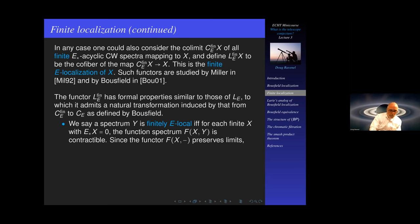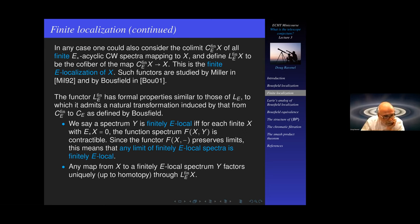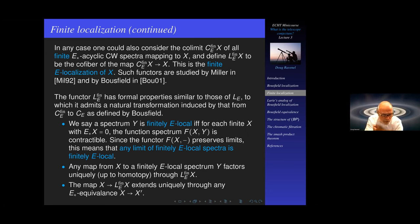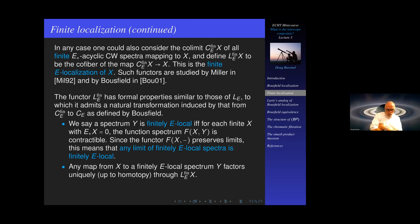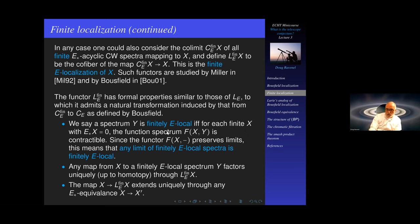A spectrum Y is finitely E-local if, for each finite X with trivial E-homology, the function spectrum from X to Y is contractible. This is a weaker condition than E-locality — before, we required it for any X with E_*(X) = 0; now we only require it for finite acyclic spectra. This functor again preserves limits, so any limit of finitely E-local spectra is finitely E-local, and any map from X to a finitely E-local spectrum factors uniquely through L_E^{fin}(X).